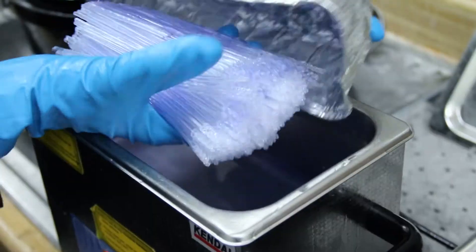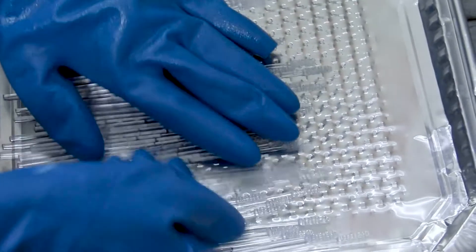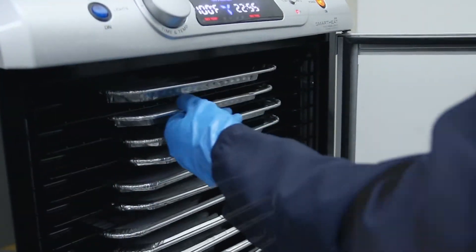Once harvested, the swabs are rinsed in ultrasonic baths of isopropyl alcohol before being spread out in a single layer and placed in a dehydrator for 30 minutes.